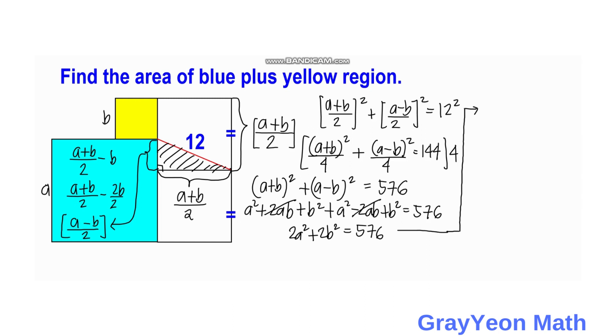So next is we factor out 2. And inside the parentheses we have A squared plus B squared is equal to 576. And we divide both sides by 2. And we will get A squared plus B squared is equal to 288.